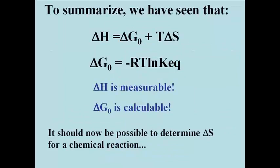To sum up, the change in enthalpy, or delta H, is a measurable quantity using a calorimeter, and the standard free energy change, or delta G0, is a calculable number using equilibrium constants and plugging it into the Boltzmann equation. Knowing delta H and delta G0, it's a simple matter to calculate the entropy change for the reaction.